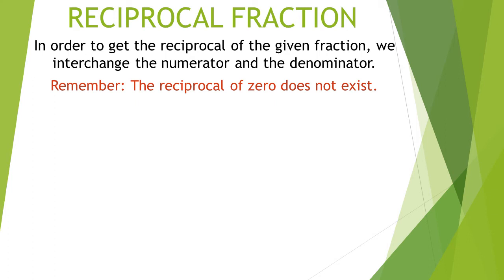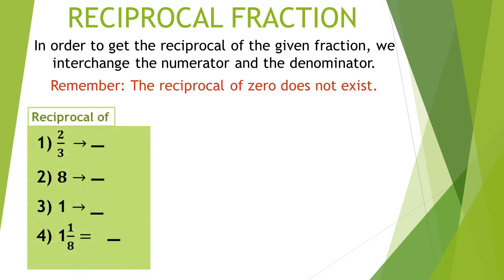Our next topic is Reciprocal Fraction. In order to get the reciprocal of a given fraction, we interchange the numerator and the denominator. Remember, the reciprocal of 0 does not exist. Question 1: reciprocal of 2 upon 3 — interchange numerator and denominator, so the answer is 3 upon 2. Question 2: find the reciprocal of 8 — the answer is 1 upon 8. Question 3: find the reciprocal of 1 — the reciprocal of 1 is 1 upon 1, which means 1, so the reciprocal of 1 is 1. Question 4: 1 1 upon 8 is a mixed number, so first we convert to improper fraction: 8 1s are 8 and 8 plus 1 is 9, so the improper fraction is 9 upon 8. The reciprocal of 9 upon 8 is 8 upon 9.